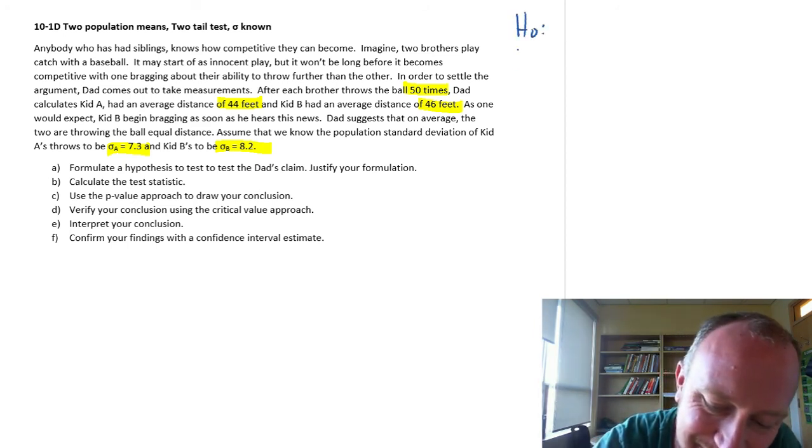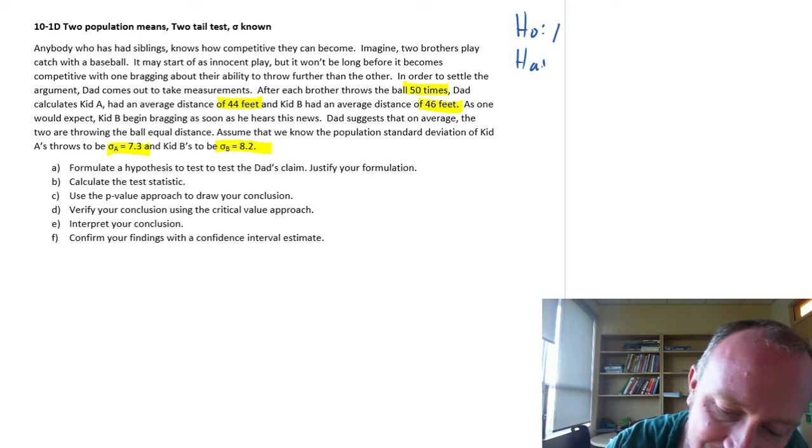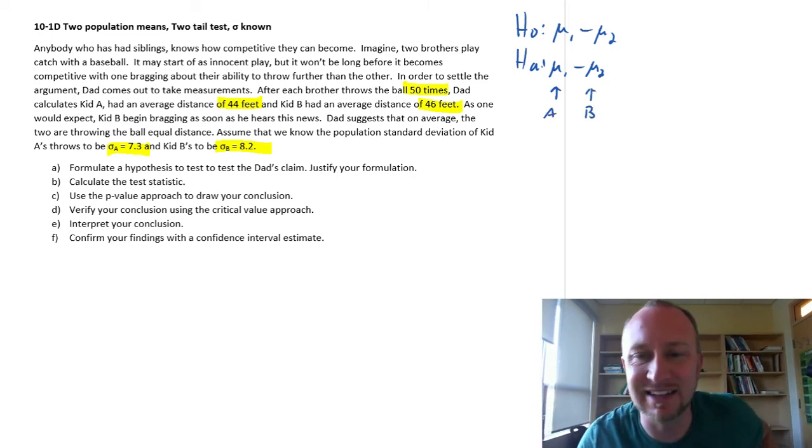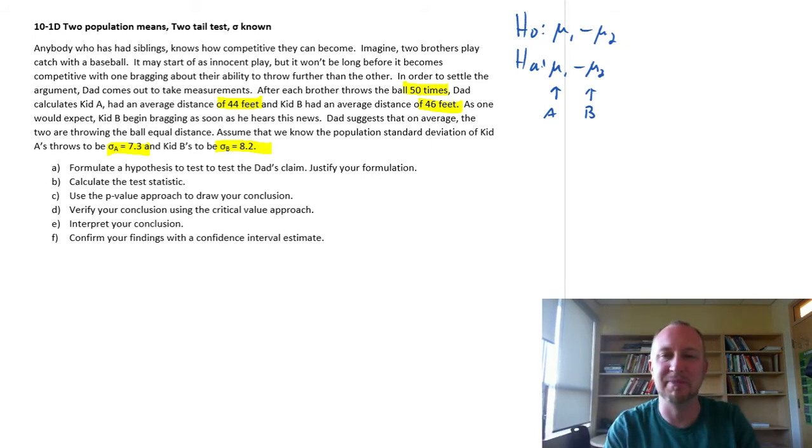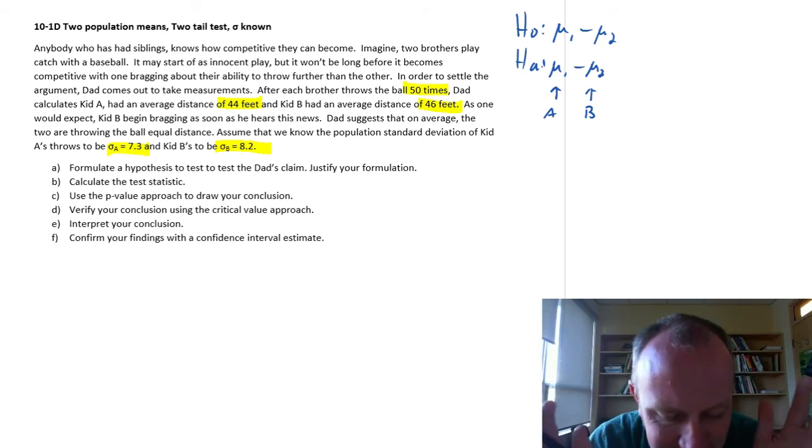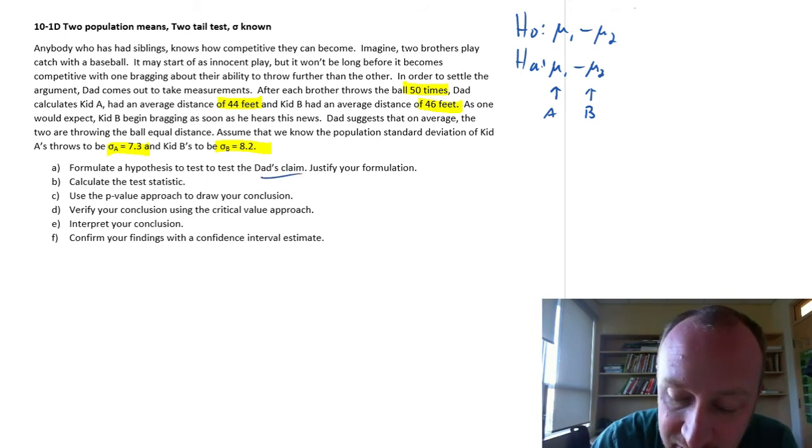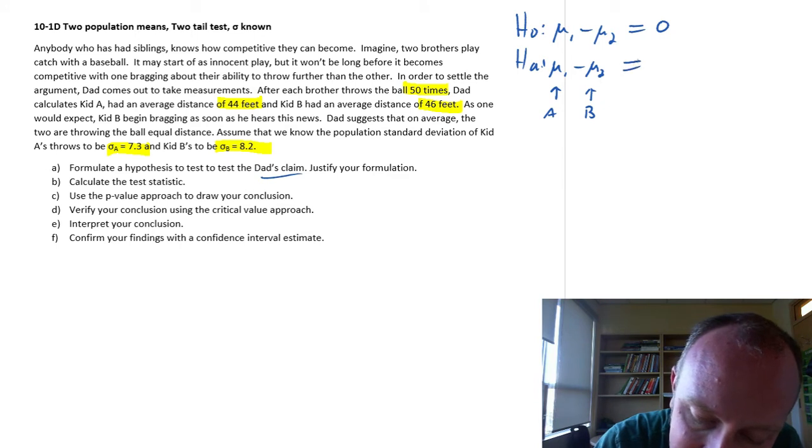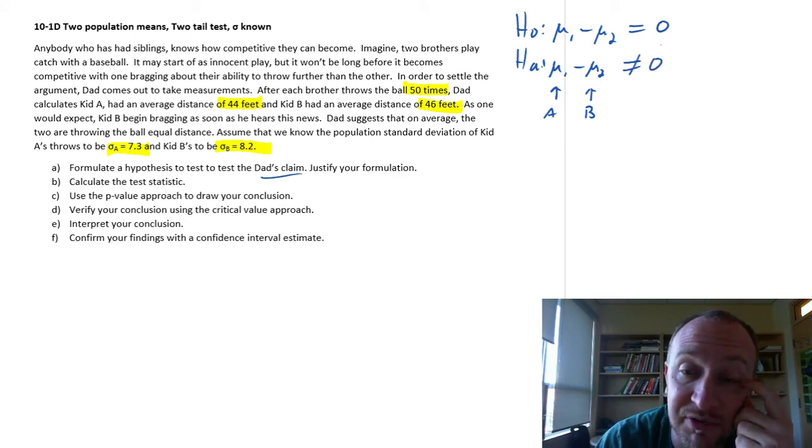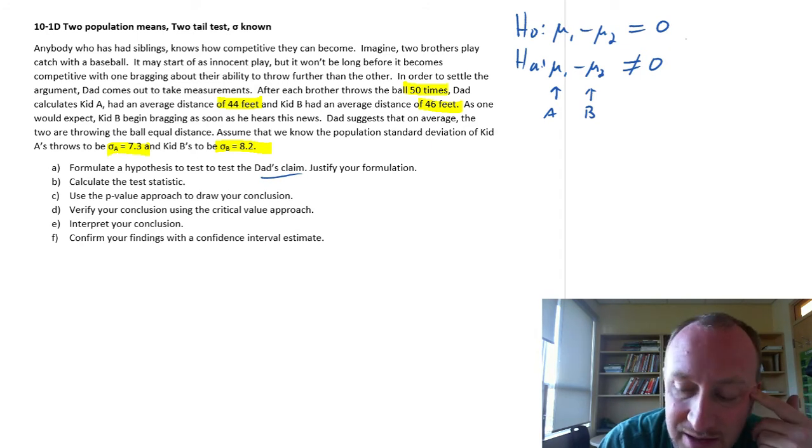As one would expect, Kid B began bragging as soon as he hears the news. Because after all, 46 is greater than 44, right? Dad suggests that on average, the two are throwing the ball the same distance. In other words, you're basically the same. 46 and 44 feet, there's no difference. Why? Well, because look at the variation in your throws. Kid A had a standard deviation of 7.3, Kid B had a standard deviation of 8.2. So there's a lot of variation in those distances. Dad predicts that they're throwing the ball the same. That's basically what we're looking at here.